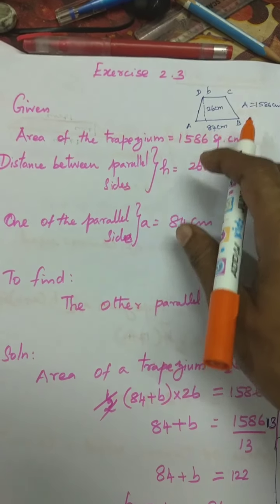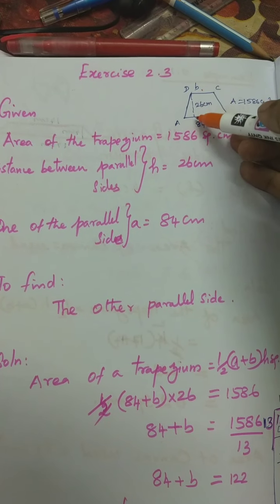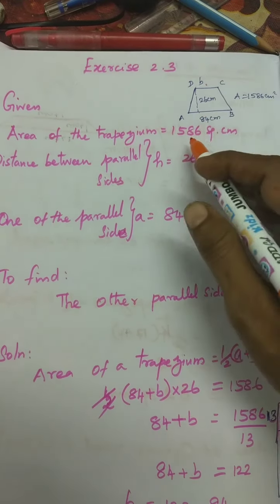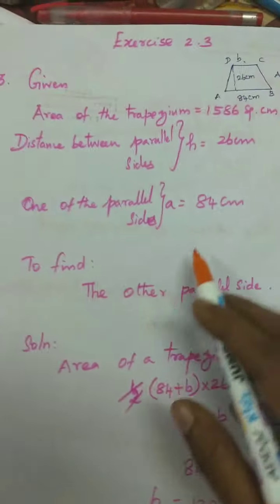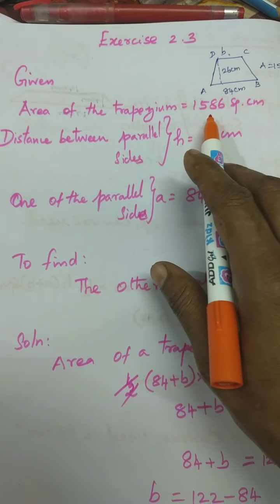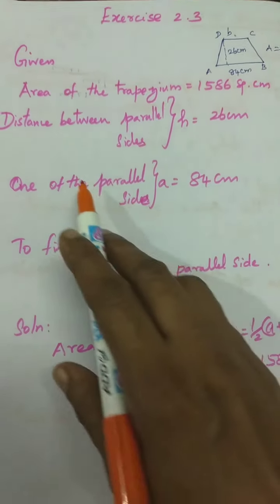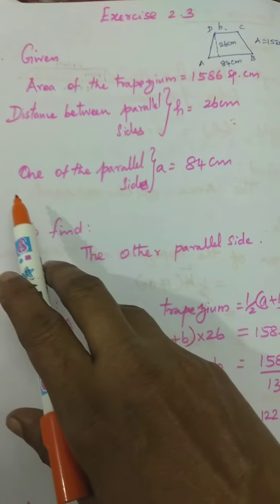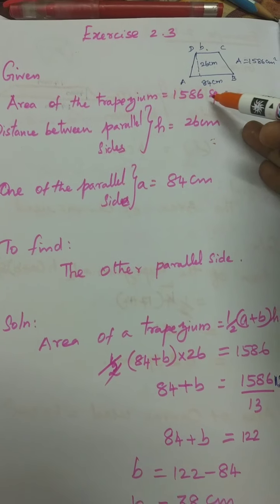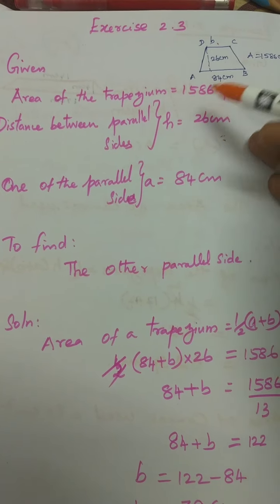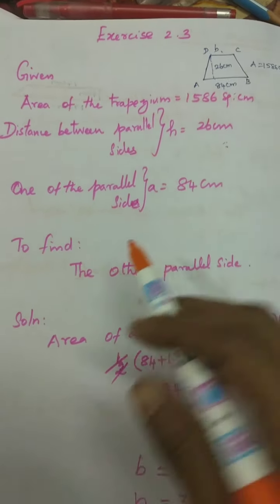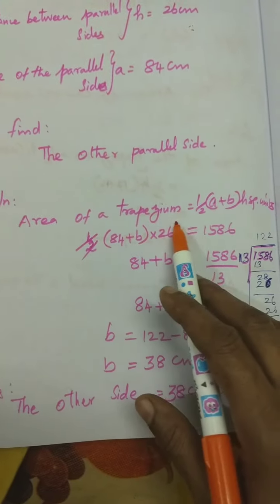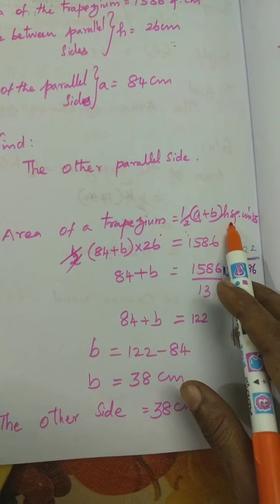You have to draw the diagram. A, B, C, D — these two are the parallel sides. The distance between the parallel sides is 26 centimeter — that is height. Given: area of the trapezium is equal to 1586 square centimeter, H is equal to 26 centimeter, one of the parallel sides A is equal to 84 centimeter. You have to find the value of B. Solution: area of a trapezium is equal to half into A plus B into H square units.